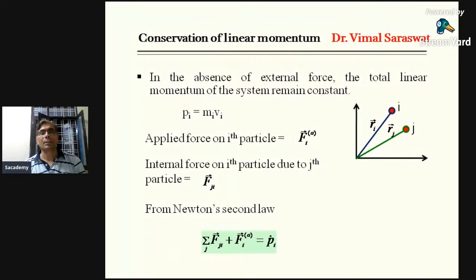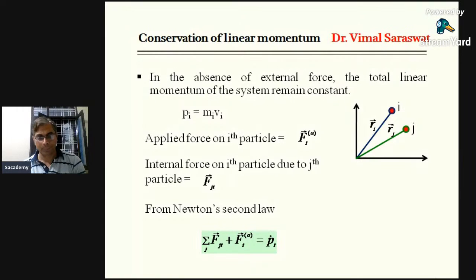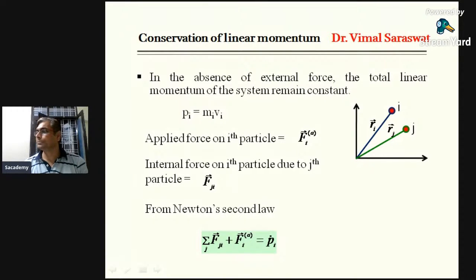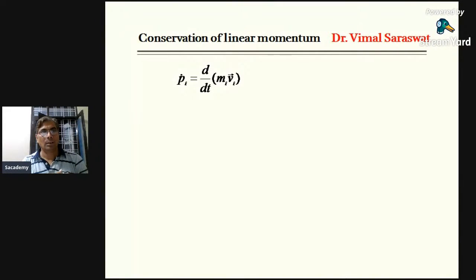Here we apply Newton's second law. From Newton's second law, F_ji + F_i applied = Ṗ_i, since F = dP/dt, and dP/dt means Ṗ. We are dealing with the i-th particle, so this is the force on the i-th particle equal to Ṗ_i. F_ji + F_i applied represents the total force, and according to Newton's second law, total force equals dP/dt.